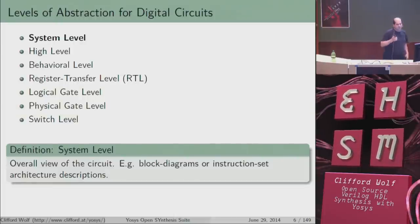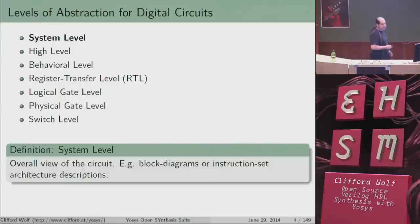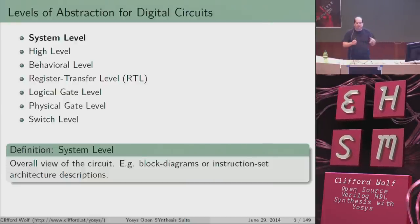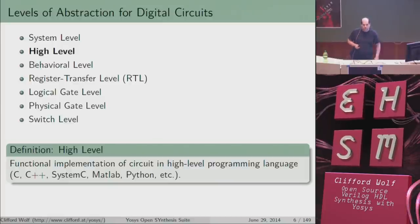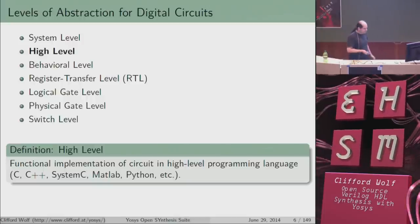When you design a digital circuit, you usually approach this problem by going down a list of abstraction layers. You start by thinking about the system level of your design — usually block diagrams, like a CPU talking with other components. Then you go to the high-level view where you implement models for the different parts of your systems in some kind of high-level language. High-level language in this case is what a circuit designer thinks is high-level, so not necessarily plain C.